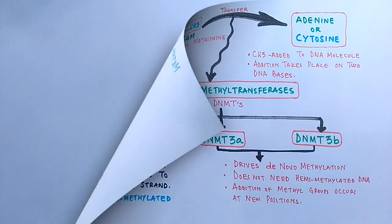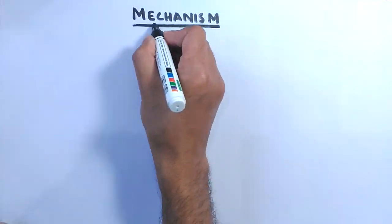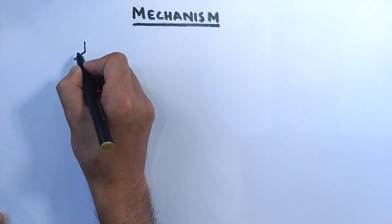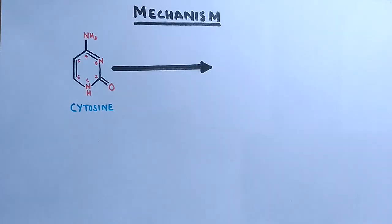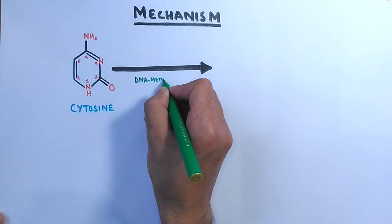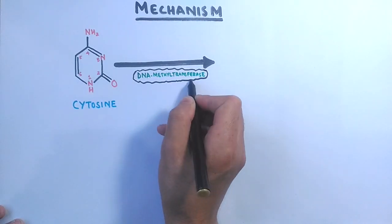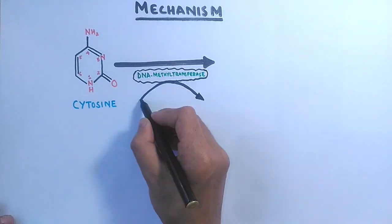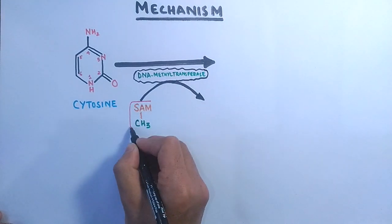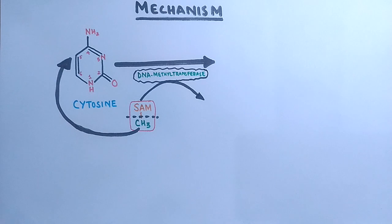Now let's look at the mechanism of DNA methylation in detail — specifically how the cytosine base gets methylated. In this diagram, you can see the cytosine base acted upon by DNA methyltransferases 3a or 3b, which drive the transfer of a methyl group from the SAMe molecule toward the fifth position of the pyrimidine ring of cytosine.